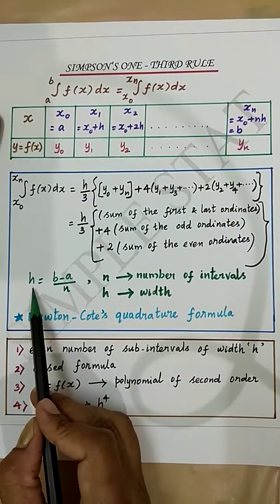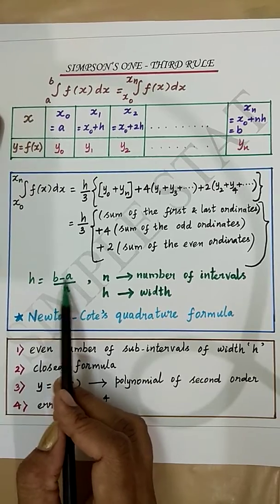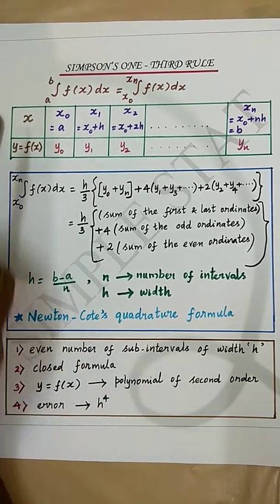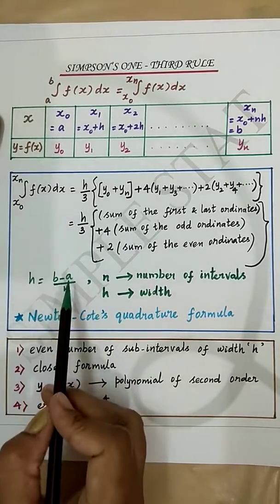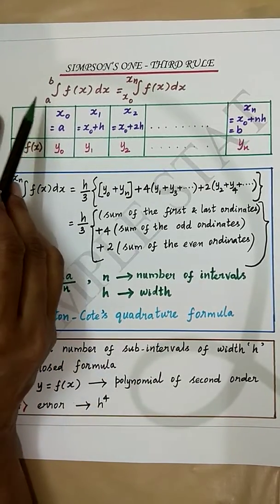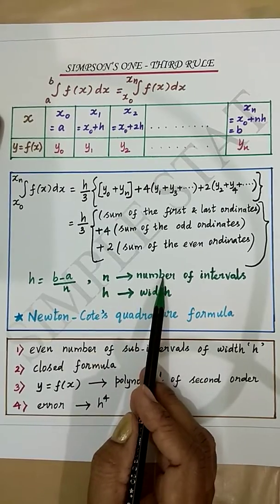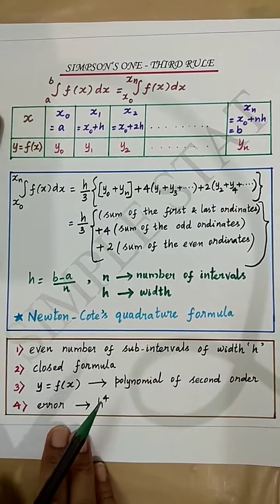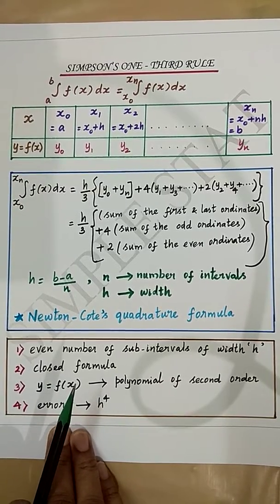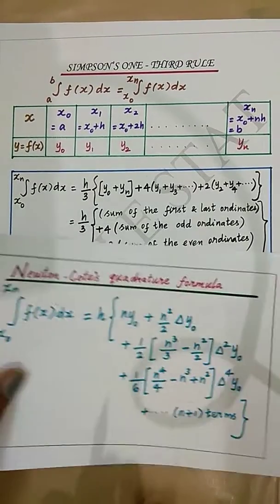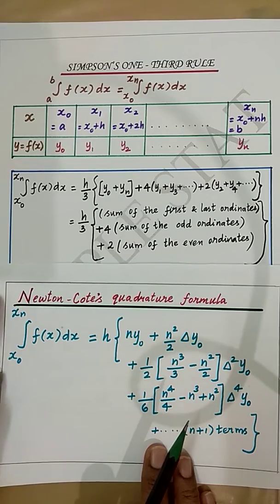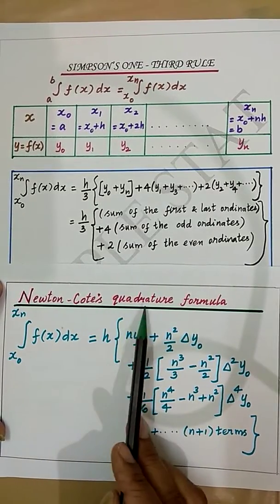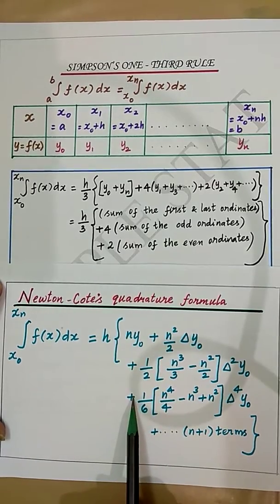Here h equals (b-a)/n, where b denotes the upper limit, a denotes the lower limit, n denotes the number of intervals, and h denotes the width. This is called Newton-Cotes quadrature formula, and it is a general quadrature formula.